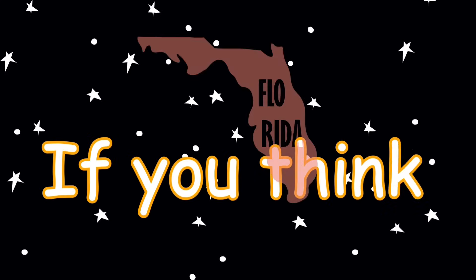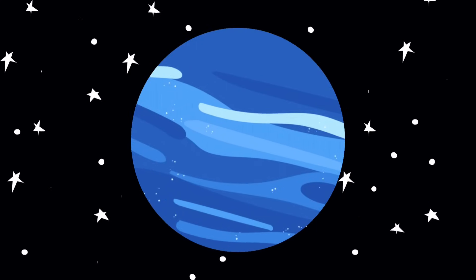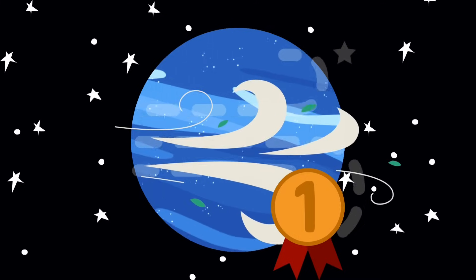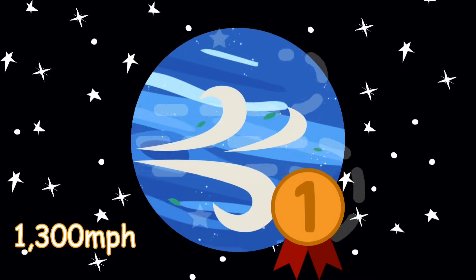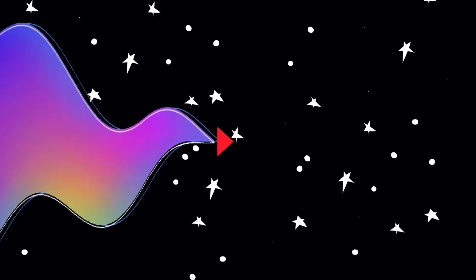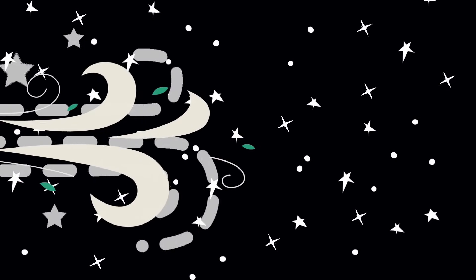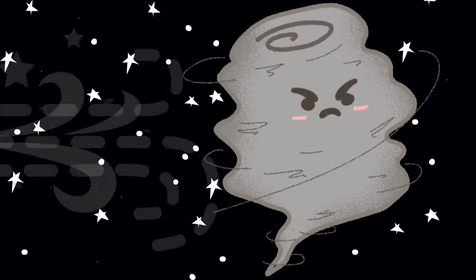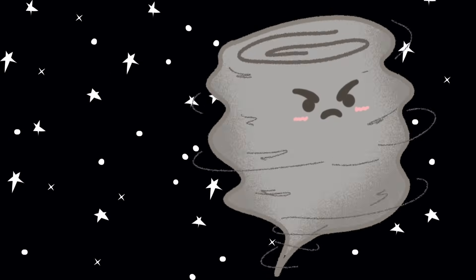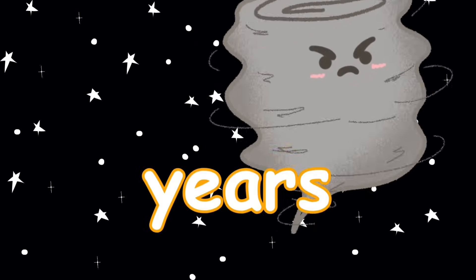If you think Florida weather is unpredictable, wait until you meet Neptune. This planet has the fastest winds in the solar system clocking in at over 1,300 miles per hour. That's faster than a fighter jet. Faster than your dad's reaction when you said you wanted to be a YouTuber instead of a doctor. These winds create giant, earth-sized storms that just swirl around like cosmic tantrums. They don't last for hours. They can last for years.